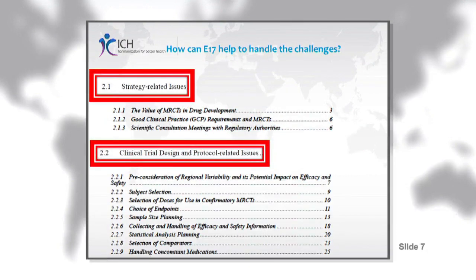So how can the E-17 guideline help to handle challenges that may arise when you plan a multi-regional clinical trial? As you can see from the table of contents, the guideline includes sections handling both strategy-related issues as well as design and protocol-related concerns. These sections provide guidance on many aspects, such as selection of subjects, doses, comparators, and endpoints, as well as how to plan and allocate the sample size.